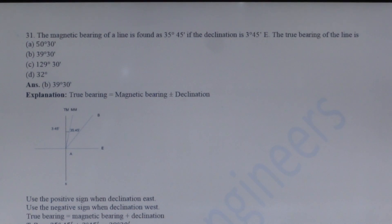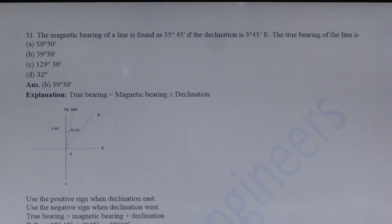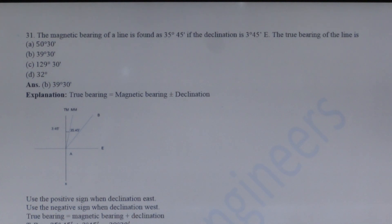Next question: The magnetic bearing of a line is found as 35°45'. If the declination is 3°45' East, find the true bearing of the line. The angle between the true meridian and magnetic meridian is known as declination. True bearing = magnetic bearing ± declination (positive when declination is East). True bearing = 35°45' + 3°45' = 39°30'. Option B is the correct answer.